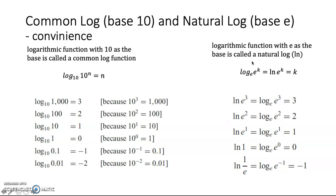Another preferred base is the e base, which we call the natural log, usually read as ln. E·log(e to the power of k), or ln(e to the power of k), is just equal to k — another convenience. For example: ln(A to the power of k) equals ln(1/e), or log(e to the power of −1) equals −1.